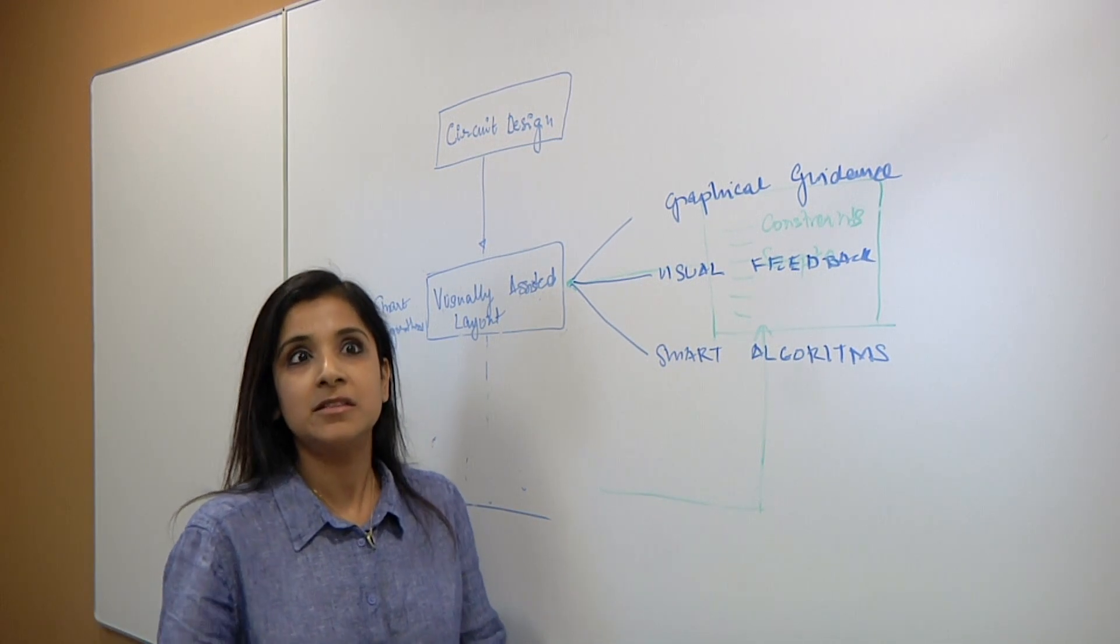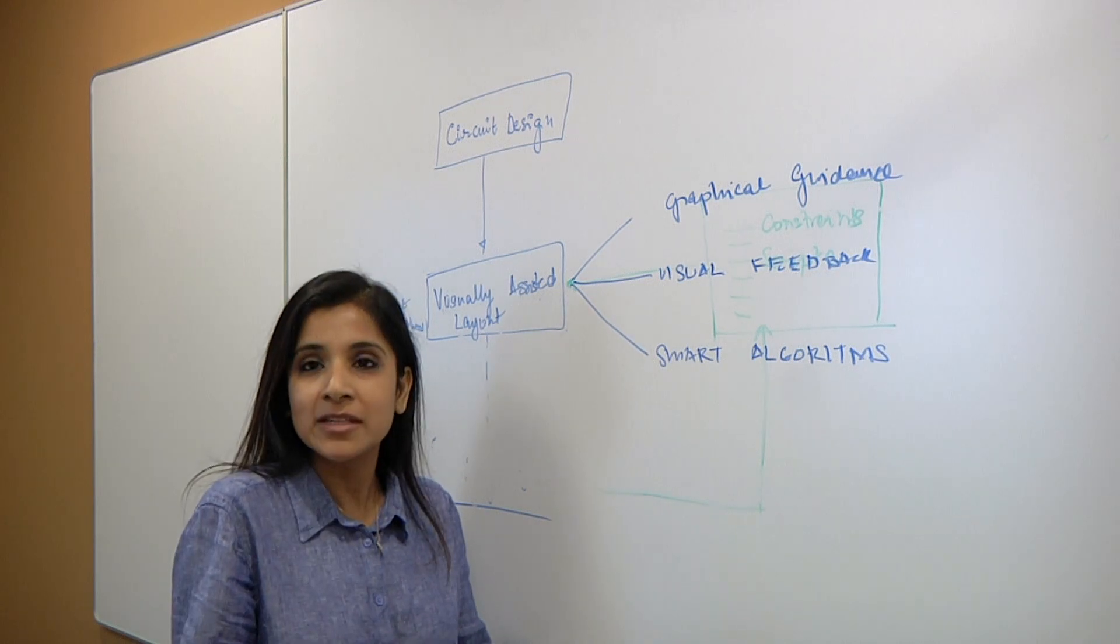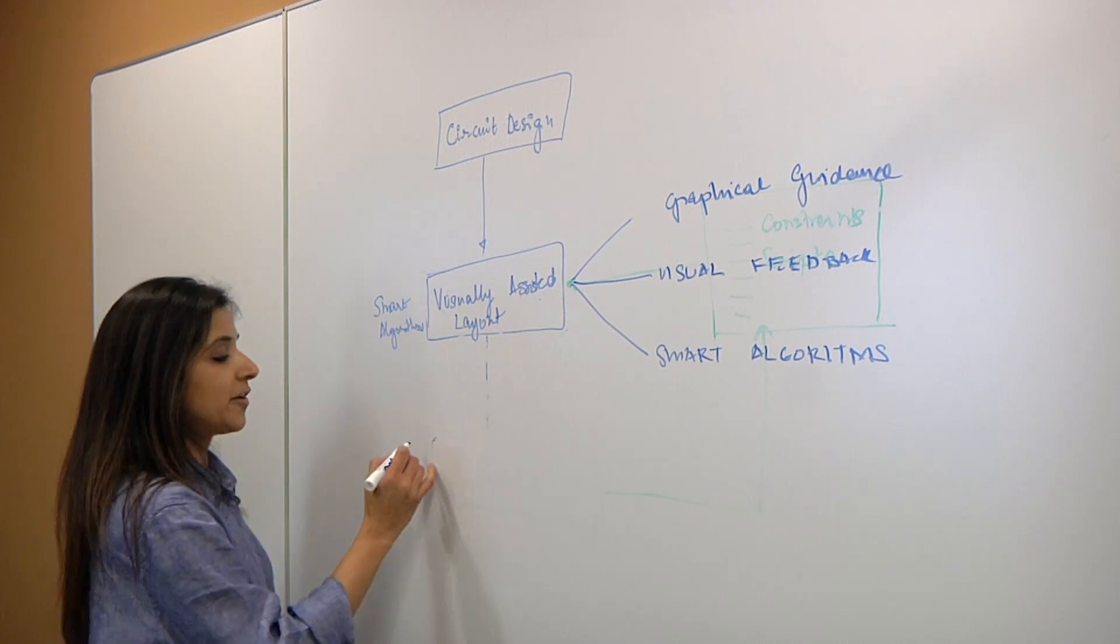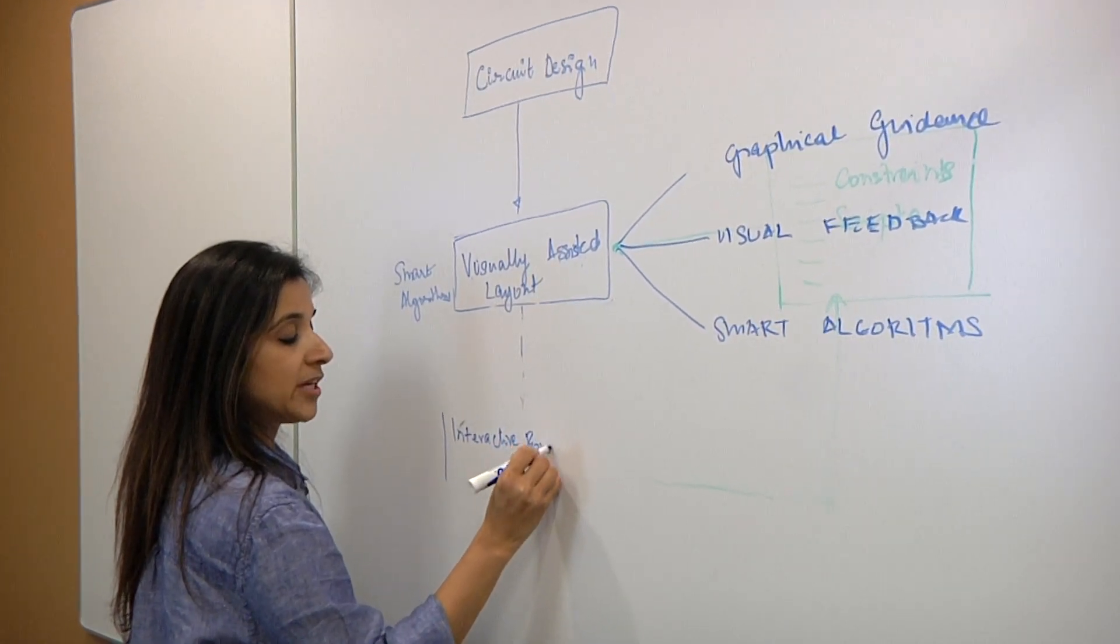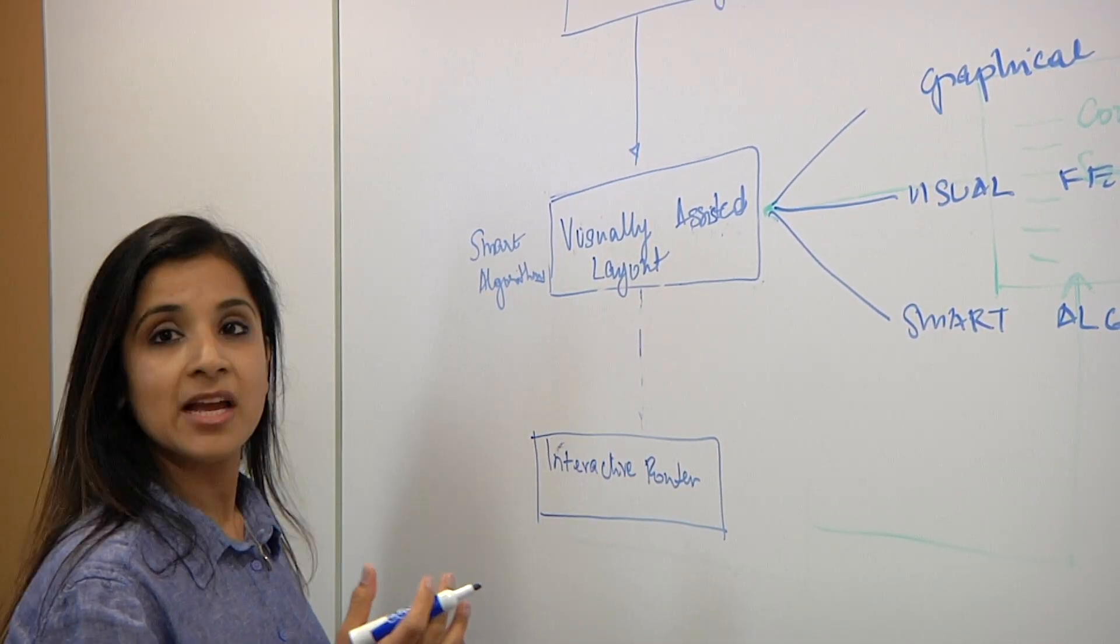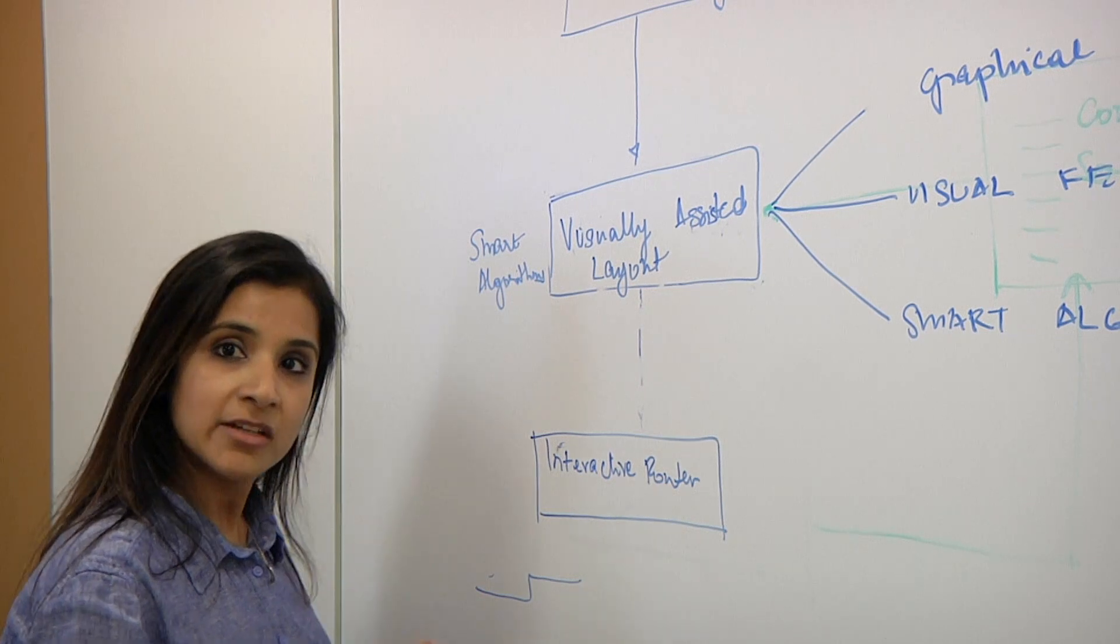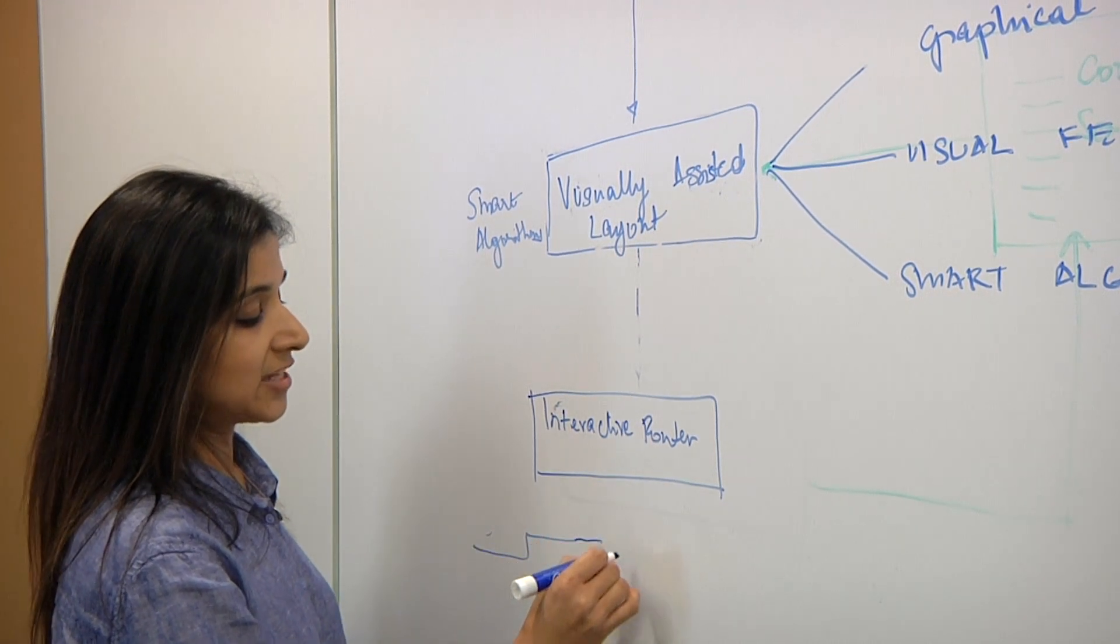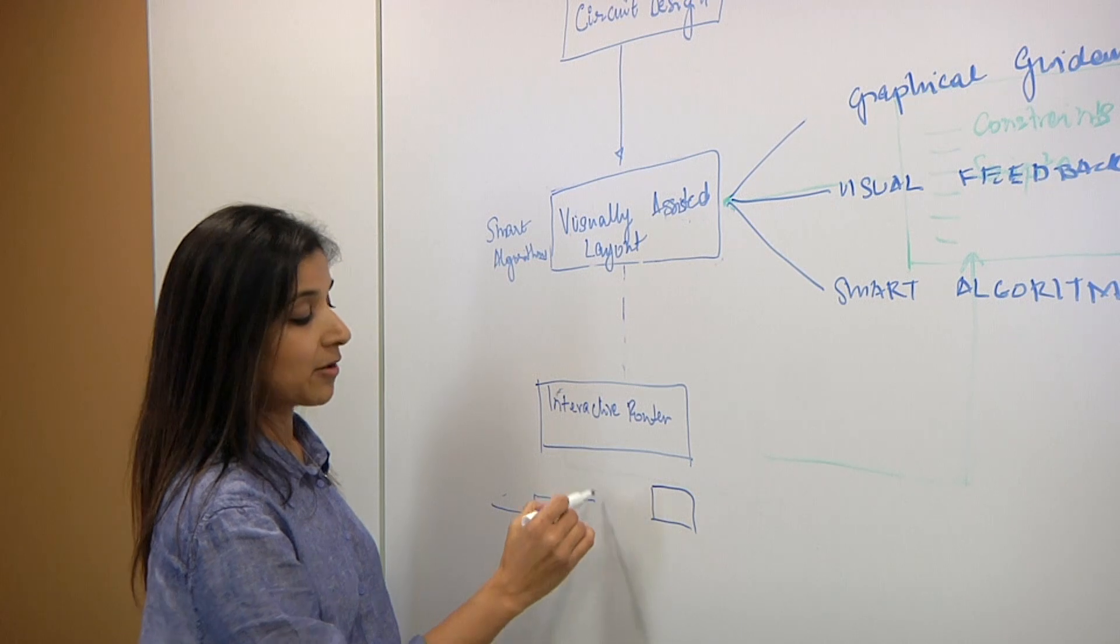So what are the pieces that actually get us to this visually assisted layout? There is an interactive router, which uses the smarts of the underlying algorithms like any router would, but at the same time is driven by user directives. And you could follow the cursor and have as much or as little control as you desire. And you can get visual feedback as to your actual connections as you are implementing. And at the same time, you could get details like whether you're aligned to a pin or not, and whether you are violating any DRCs.